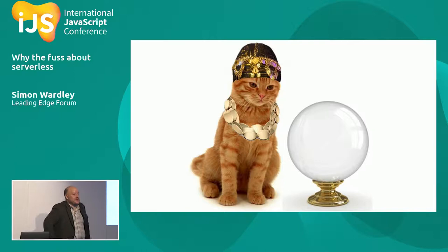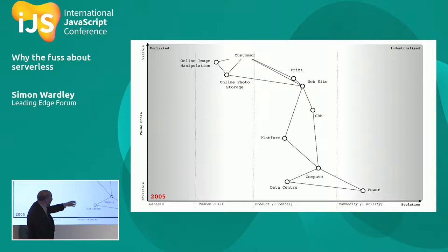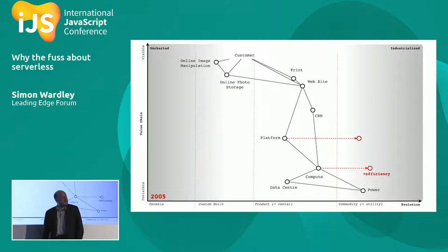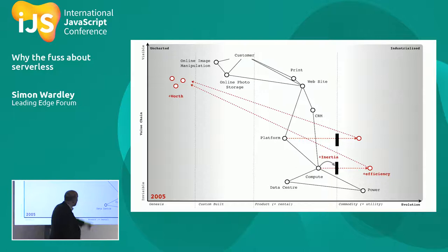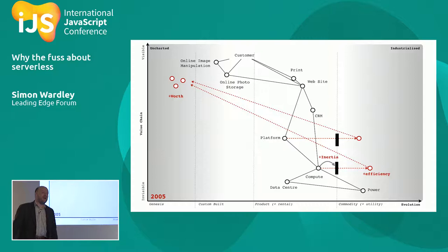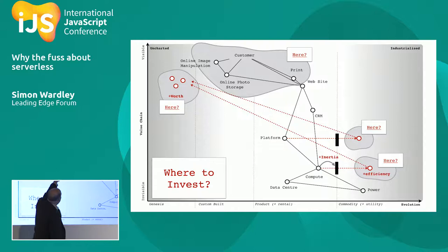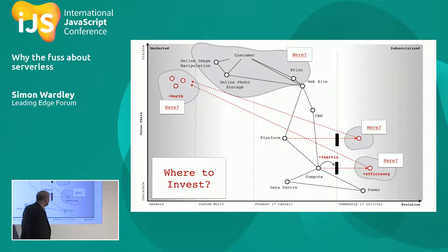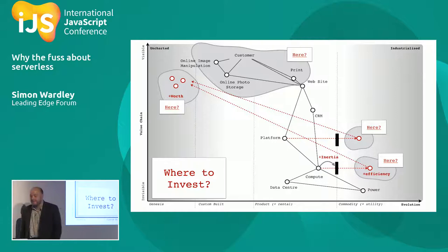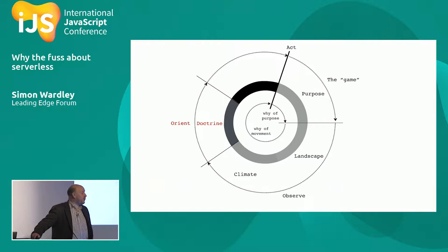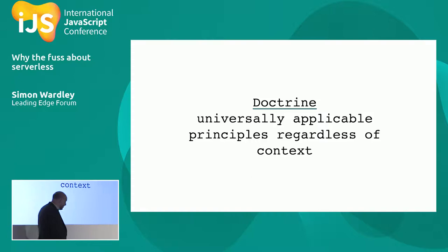Now I can do some basic prediction. I've shown you a few simple patterns — there are 30. Back in 2005, we had a map and knew that compute and platform would end up going to a utility. We knew we'd have inertia to the change. And we knew another pattern — componentization — that this would enable an explosion of higher-order systems with new sources of value. That told me where to invest: do I invest in our existing service, or build the world's first computers-as-a-service or platform-as-a-service, or wait until somebody else does that and build on top of them?